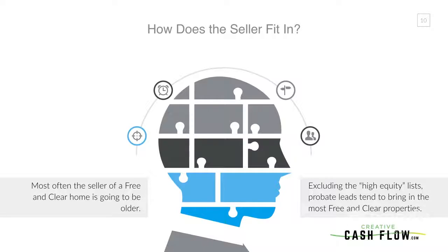What if the seller owns it free and clear? Free and clear sellers most often are going to be older sellers. Most often somebody who owns their house free and clear is going to be above the age of 60 — that's what I've run into anecdotally. Excluding the high equity list, probate leads tend to be where I see the most free and clear properties. So that's your seller profile if you're wanting these free and clear deals.